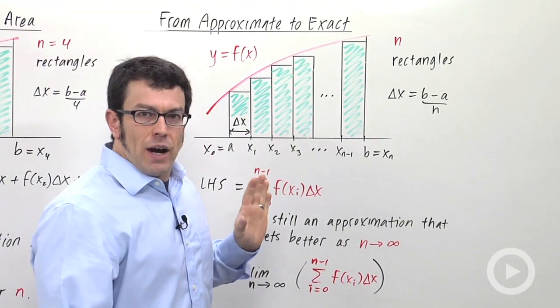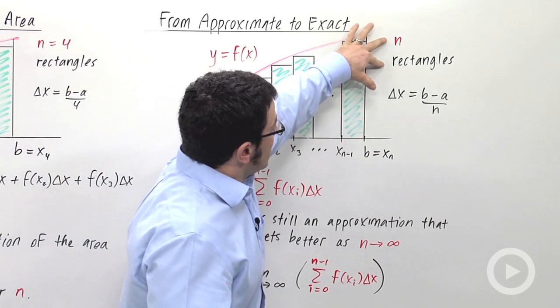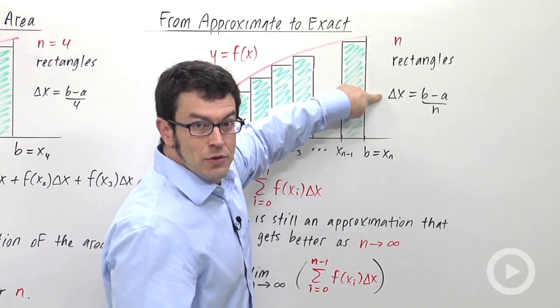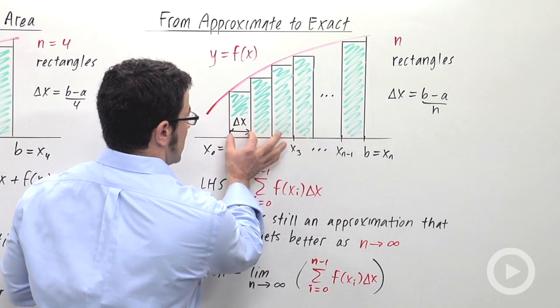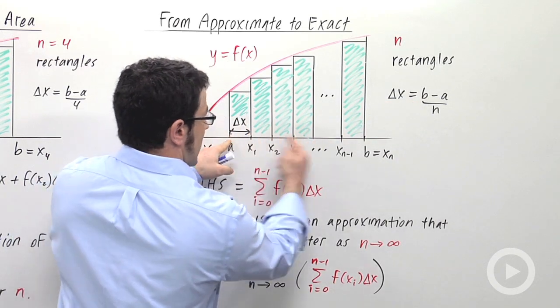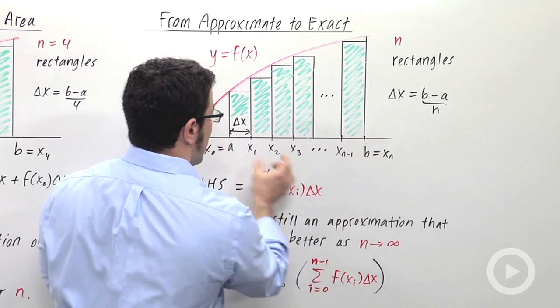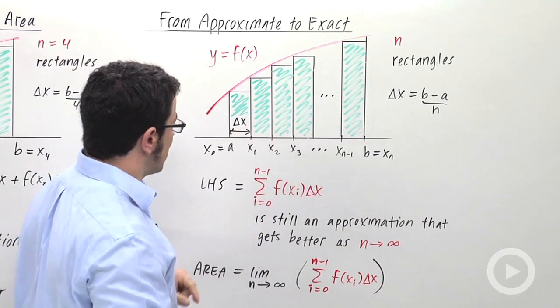Let's say that we have n rectangles, so I'm not going to specify the number, just n. Delta x, the width of each rectangle, will be b minus a over n. So each of these widths is b minus a over n. b minus a, again, is this entire width divided by n, the number of rectangles. Gives me the individual width here.